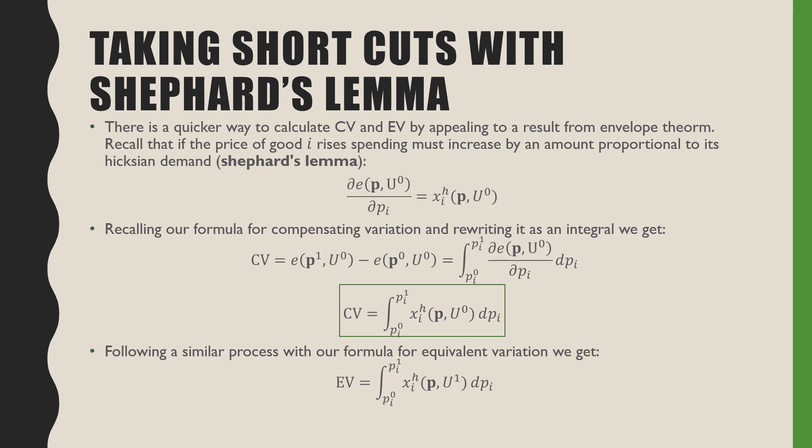Following a similar process, we can find equivalent variation by taking the same integral but evaluated at u1 instead. The real difference between compensating variation and equivalent variation is just what our base utility is — is it the old utility u0 or the new utility u1? That's compensating variation and equivalent variation. I hope this video helps, I'll see you in another one.